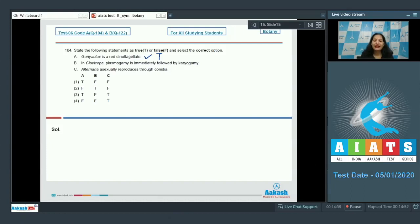B: In Claviceps, plasmogamy is immediately followed by karyogamy. No, in Claviceps it's a sac fungus, hence there is a delayed karyogamy and there will be a dikaryophase which can be seen due to delayed karyogamy. So this is false.